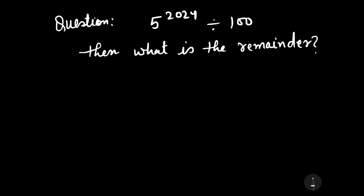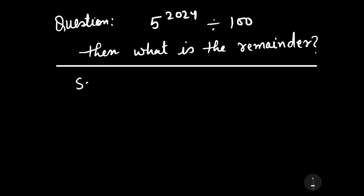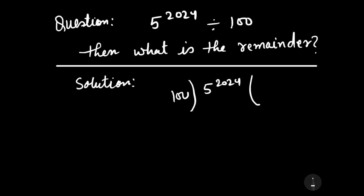Our question is: when 5 to the power 2024 is divided by 100, what is the remainder? We have to find the remainder when 5 to the power 2024 is divided by 100. There will be some quotient and there will be some remainder, and we have to find that remainder.